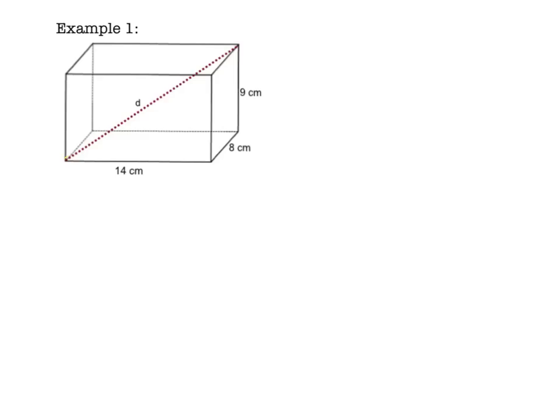Now that your steps are in your notes, let's do an example together. Please make a sketch of this figure in your notes. If you need to pause the video to do that, please do. Once your sketch is drawn, let's follow the steps. Our first step is write the formula. D squared is equal to length squared plus width squared plus height squared.